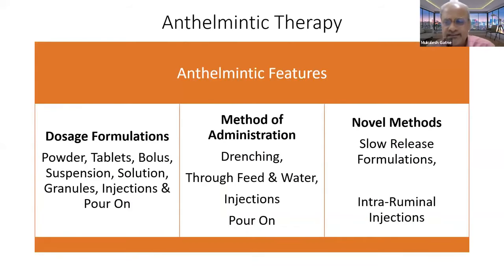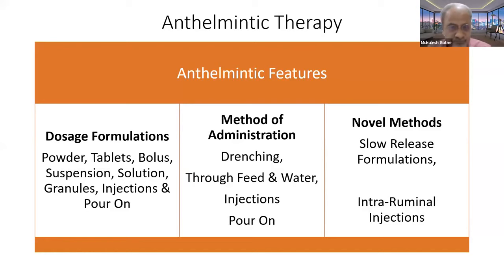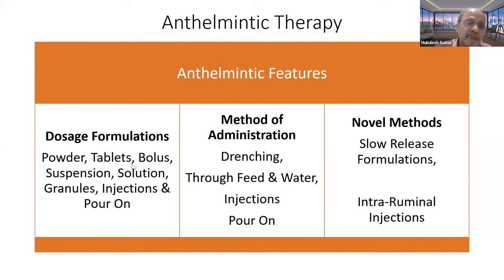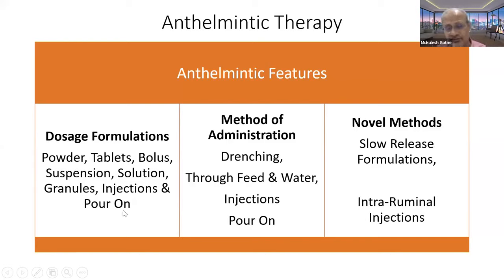Anthelmintics are compounds used to kill worms and their immature stages. There are a number of anthelmintics belonging to different groups, and a number of formulations available to ease administration: powder, tablet, bolus, suspension, solution, granules, and injections. Ivermectin pour-on methods are also available. Mostly these anthelmintics are given through feed and water; drenching is also done. There are novel methods like slow-release formulations and intraruminal administration.